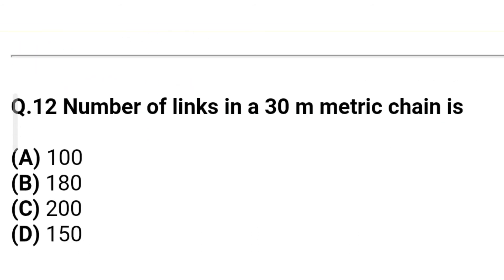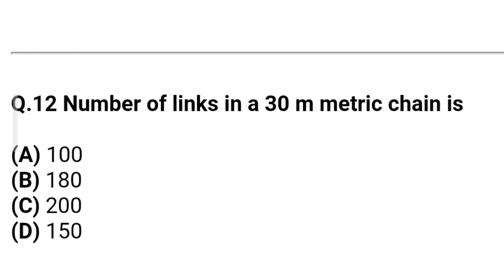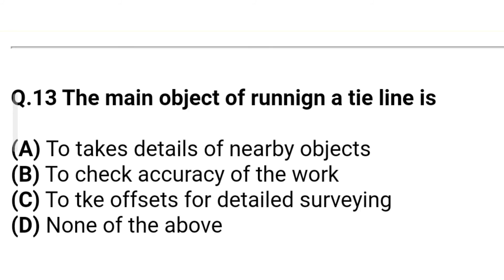Question 10: The number of links in a 30-meter metric chain is — Option A: 100. Option B: 180. Option C: 200. Option D: 150. The correct answer is Option D — 150.